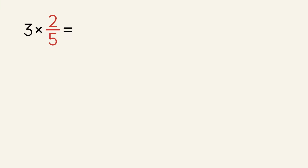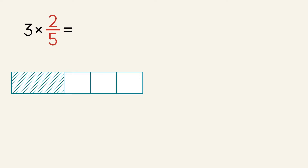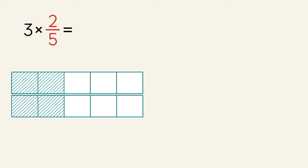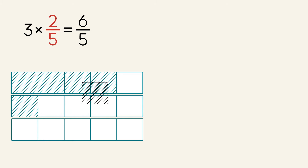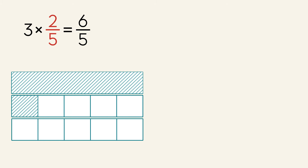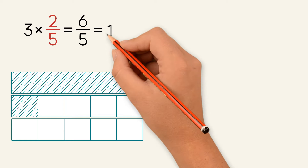Let's try another one: three times two-fifths. When we multiply three by two-fifths, it means we are finding three groups of two-fifths. Let's draw it out — one two-fifths, another two-fifths, and a third two-fifths. We have six-fifths filled in, so six is our numerator. The denominator stays the same. Six-fifths is an improper fraction, so we need to convert it to a mixed number. We regroup fifths to make a whole, giving us one whole and one-fifth, or one and one over five.